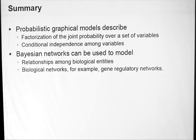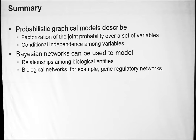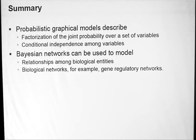I'm going to continue with more specific examples of graphical models — hidden Markov models and Markov chains — on Thursday. Today I'll finish with a short summary: probabilistic graphical models describe the factorization of a joint probability over a set of variables and describe conditional independence relations among variables. They are one of many models describing statistical relationships between variables, and they prove very useful in different applications in computational biology, in particular modeling regulatory networks and causal relationships between variables.